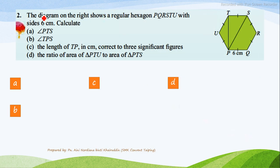Next question number 2. The diagram on the right shows a regular hexagon PQRSTU with side 6 cm. Calculate angle PPS. Angle PPS is here. As you can see, this is 90 degrees. So answer 90 degrees. Part B, angle TPS.